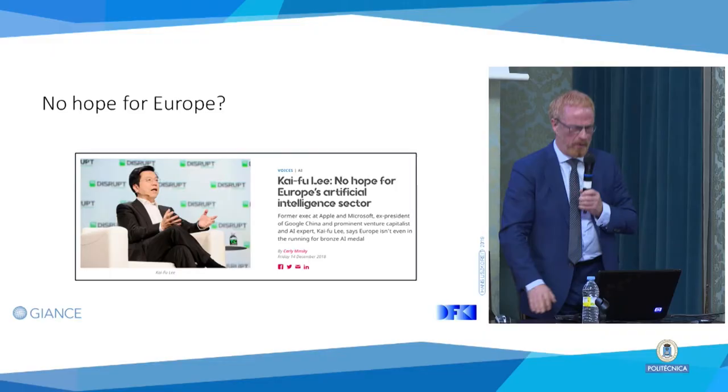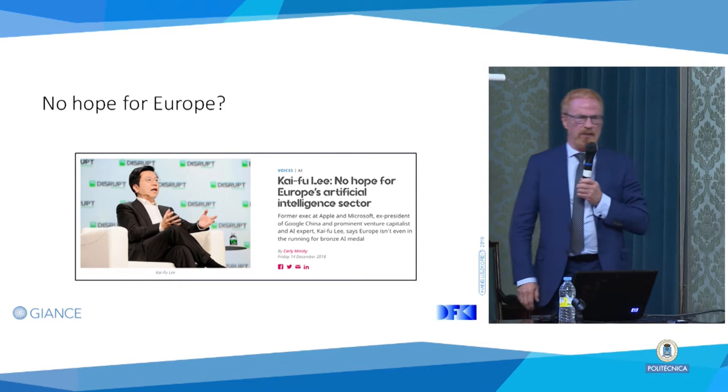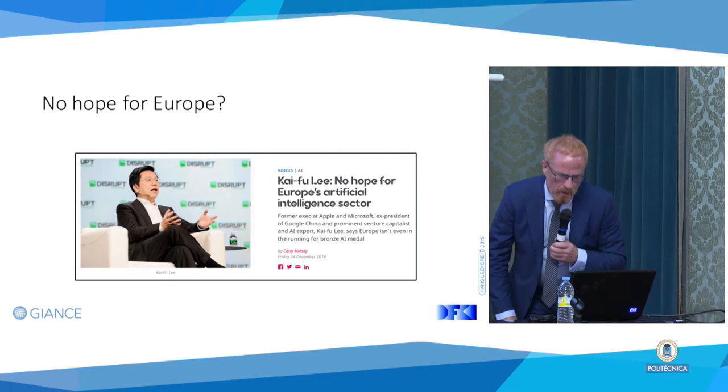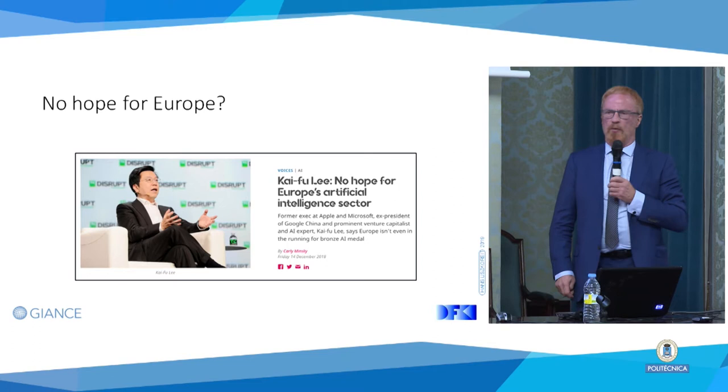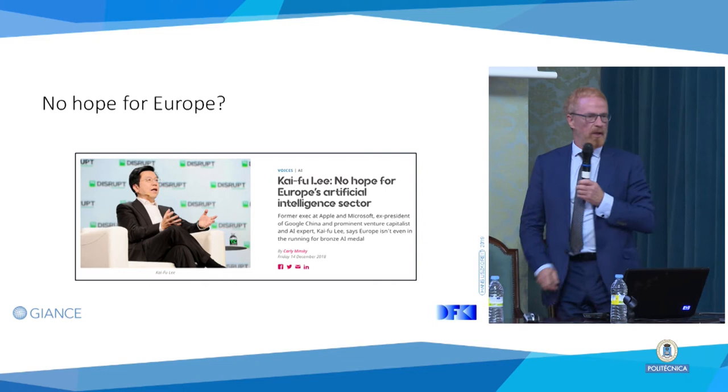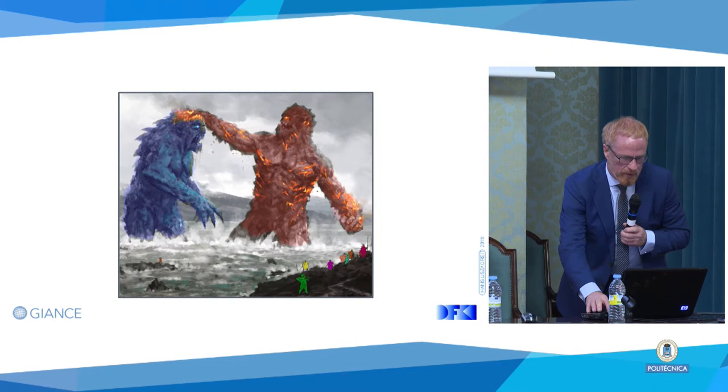There's another author much more well known — Kai-Fu Li. He was one of the early pioneers of speech analysis at Carnegie Mellon, then a research boss at Apple, then at Microsoft, then president of Google China, now an investor. He wrote a bestselling book called 'AI Superpowers,' describing the race between the United States and China. I know him personally, and journalists asked him about Europe. He said there's no hope really for Europe — literally, in the race, Europe is not even running for bronze medal.